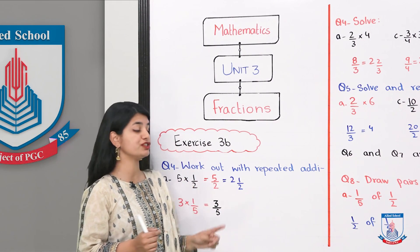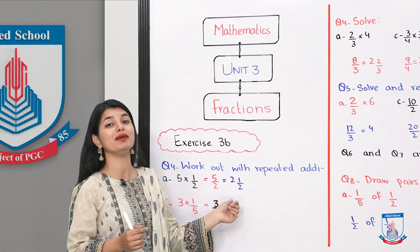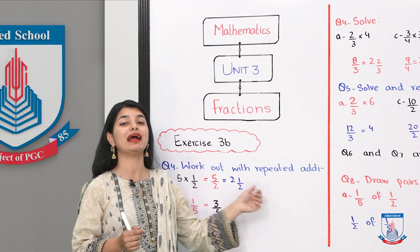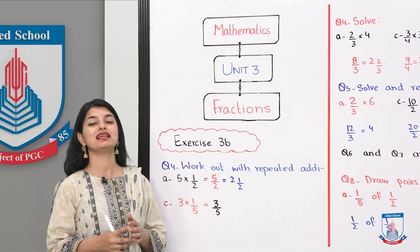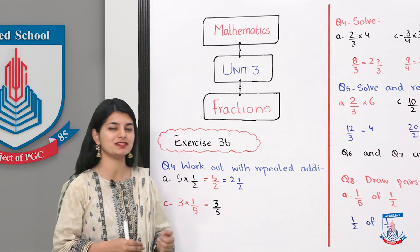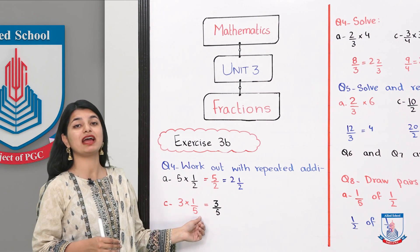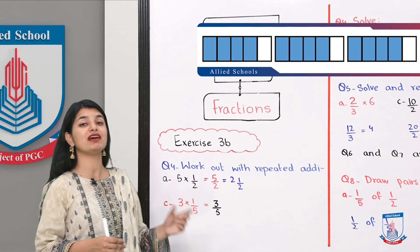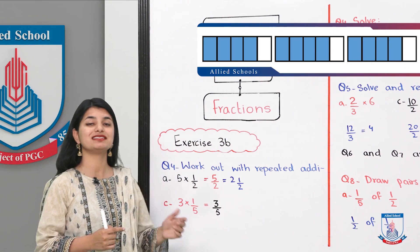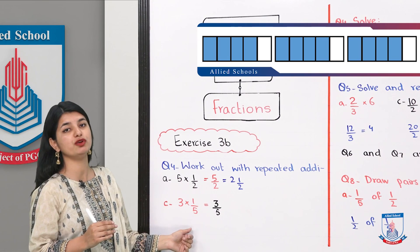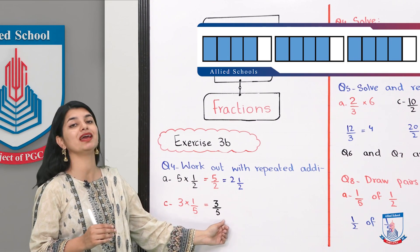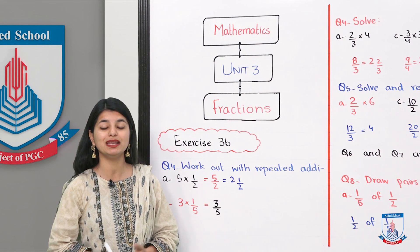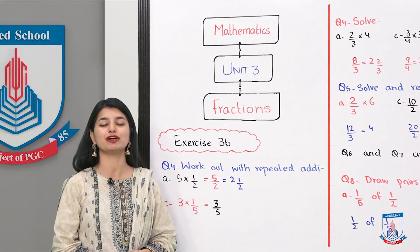Now this is improper fraction because your numerator is big and denominator is small. Therefore you can convert this into 2 whole 1 by 2 by dividing this. This way you have to represent it in the diagram. If we see 3 into 1 by 5, then you can see 3 different diagrams. If you add them, the answer will be 3 over 5. So this is how you have to do the remaining 2 parts. Let's solve them and see question number 5.